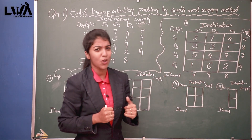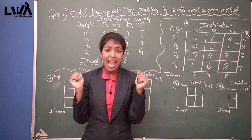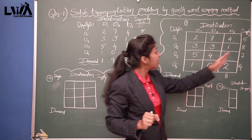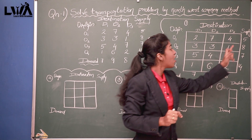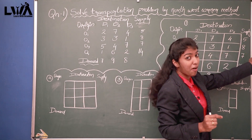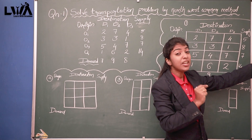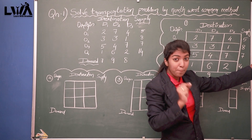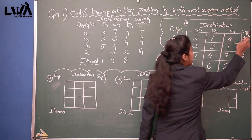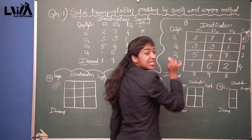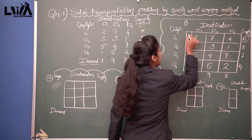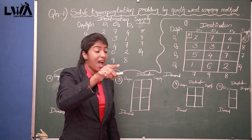Now let's solve this. The first thing we have to look at is the supply part and the demand part. Here the values are 7, 9, 8, 5, 8, 7, 14 — which is the least one? Yes, the least one is 5. According to the North West Corner Rule, we select the lowest value, which is 5, and drag it to the North West corner area. So 5 is written in the North West corner.